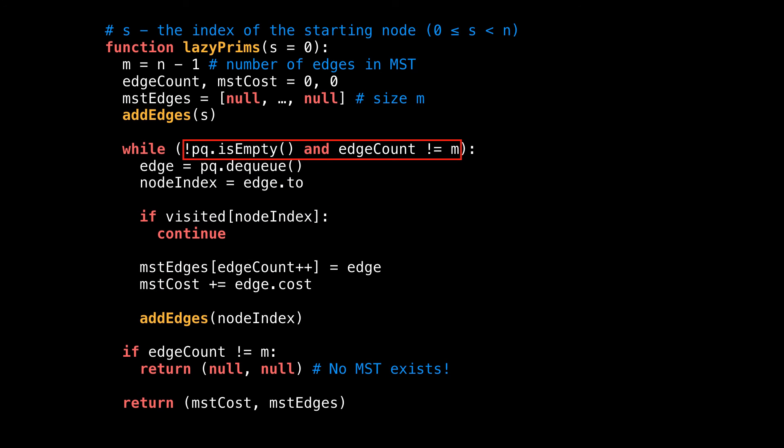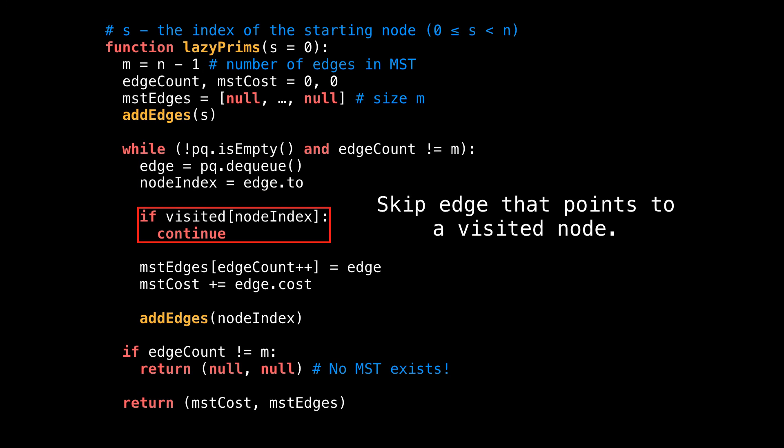Once we've added the first set of edges to the priority queue, the algorithm really begins and we enter a while loop. While the priority queue is not empty and the minimum spanning tree is not complete, keep iterating. Then inside the loop, we pull the next best edge out of the priority queue and grab a reference to the destination node index. This is the node the edge is pointing at. This next line is very important. It's the logic that skips adding an edge to the priority queue if that edge points to an already visited node. Again, edges can become stale or outdated in the priority queue if the node they're pointing at becomes visited via another path.